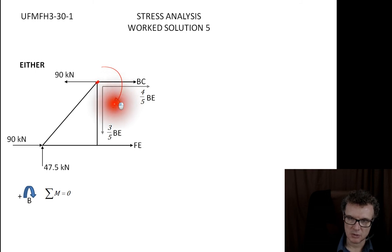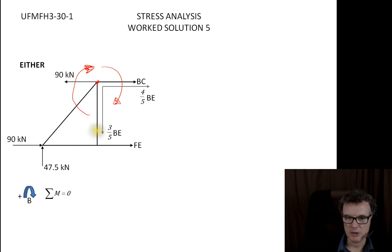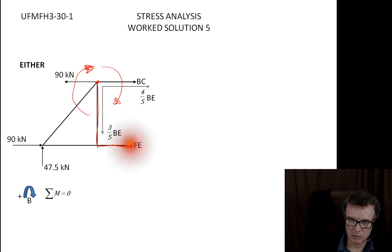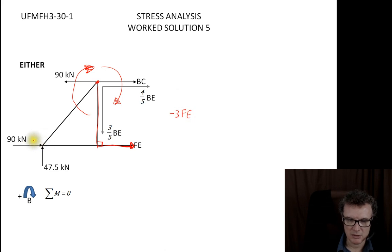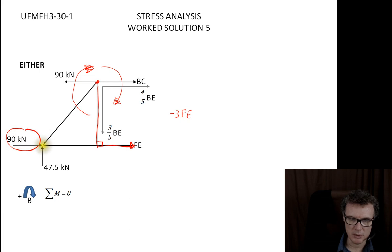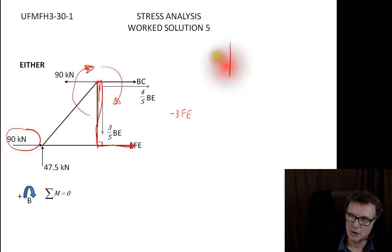Draw a clockwise 'clock face' on your diagram to help determine positive or negative signs for moments. Measuring the distance from the pivot to FE — I think that's 3 meters — and since that moment wants to go anti-clockwise, it gives −3·FE. The 90 kN force is also causing a moment: move it across to line up on an axis, measure the distance as 3 meters, which is also anti-clockwise, giving −90 × 3.